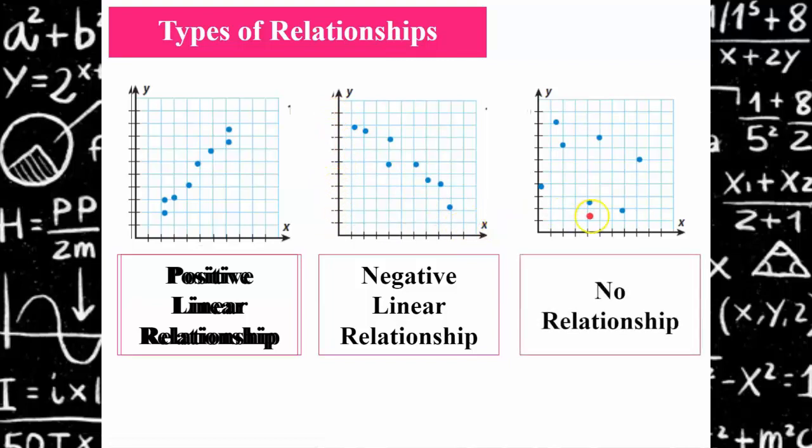You could also have a scatter plot that shows absolutely no relationship, that there is no pattern, that points are just scattered all over the graph.